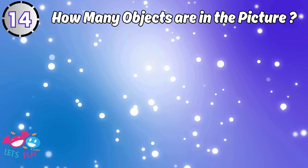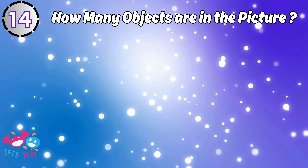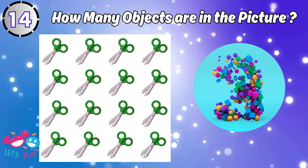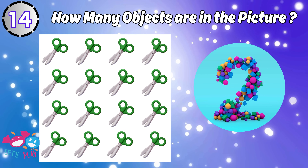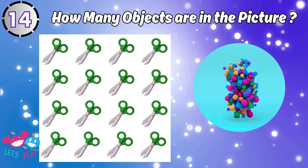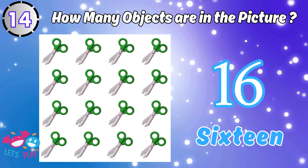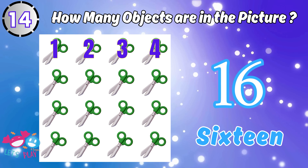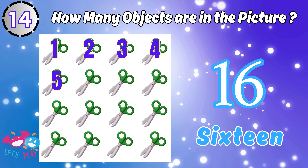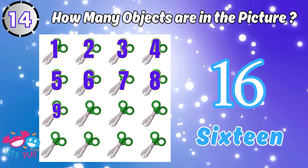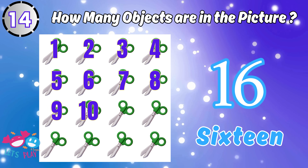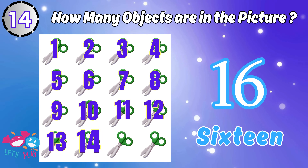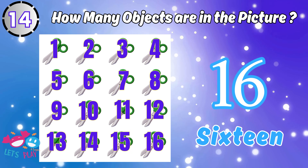How many objects are in the picture? Six. One, two, three, four, five, six, seven, eight, nine, ten, eleven, twelve, thirteen, fourteen, fifteen, sixteen.